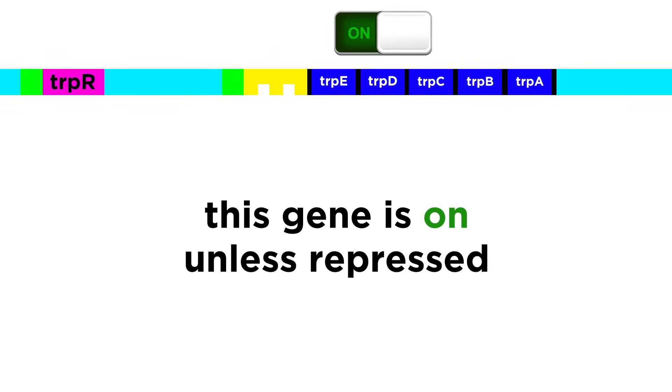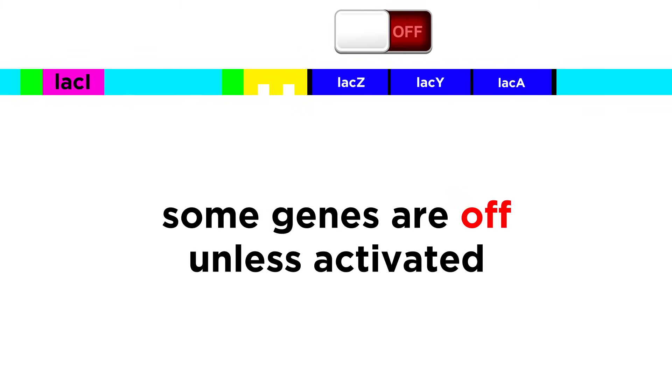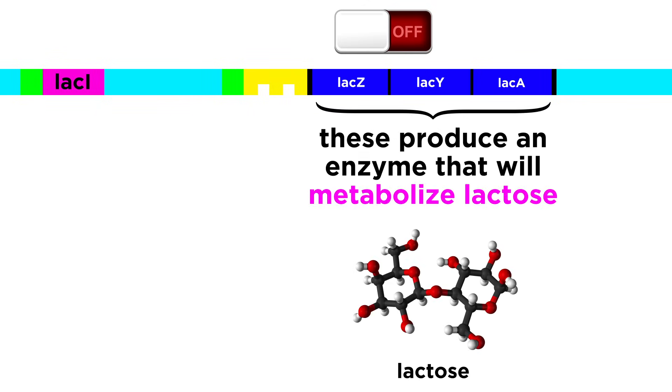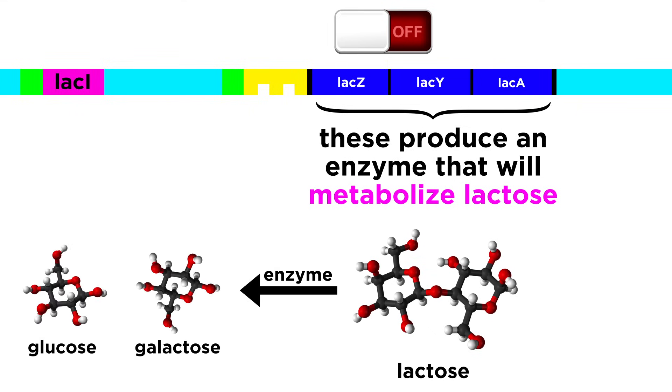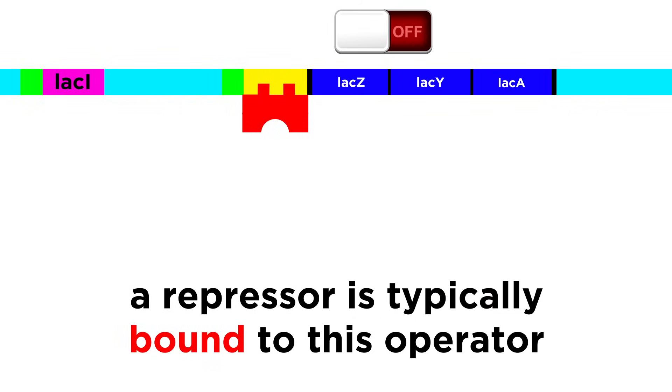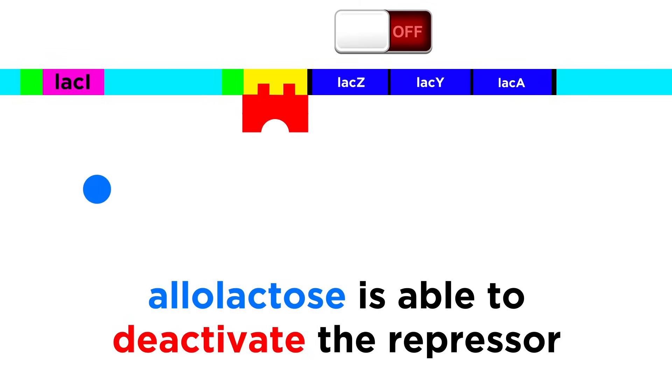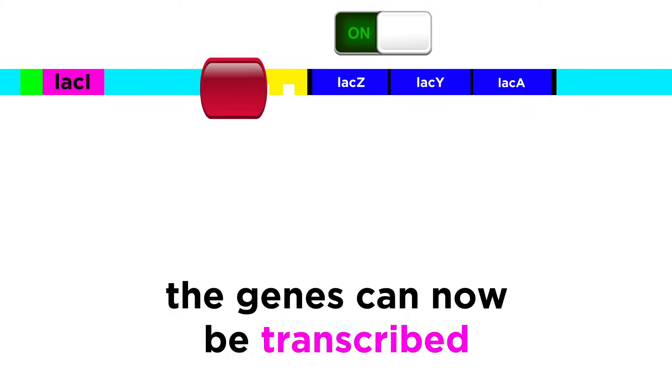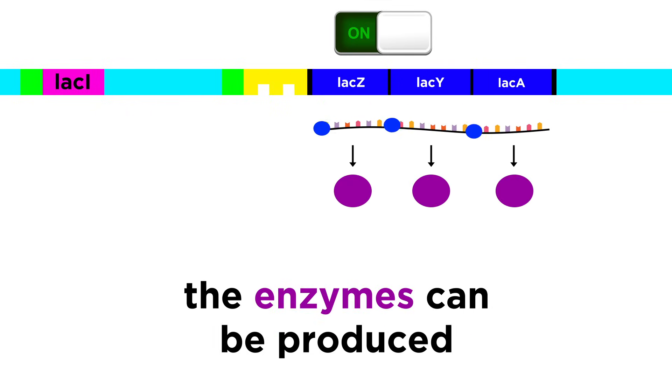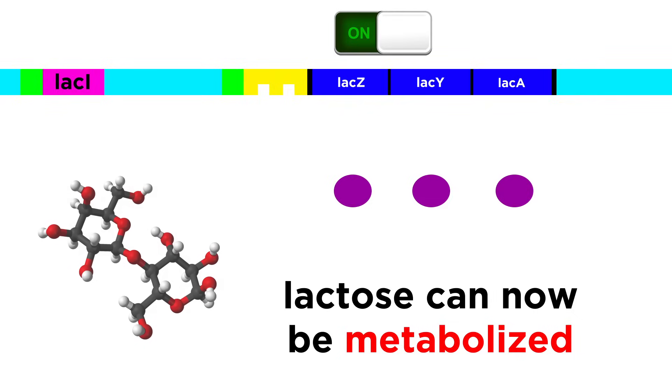While we just saw an example where a gene is typically on unless repressed, there are also genes that are typically off, or silenced, unless activated. In E. coli, again, there are genes that when expressed, produce an enzyme that will metabolize lactose, a disaccharide, into individual monosaccharide units, glucose and galactose. There is typically a repressor bound to the operator that corresponds to these genes, but an isomer of lactose called allolactose will bind to the repressor and deactivate it, thus allowing for transcription of the gene, enzyme production, and higher levels of lactose metabolism.